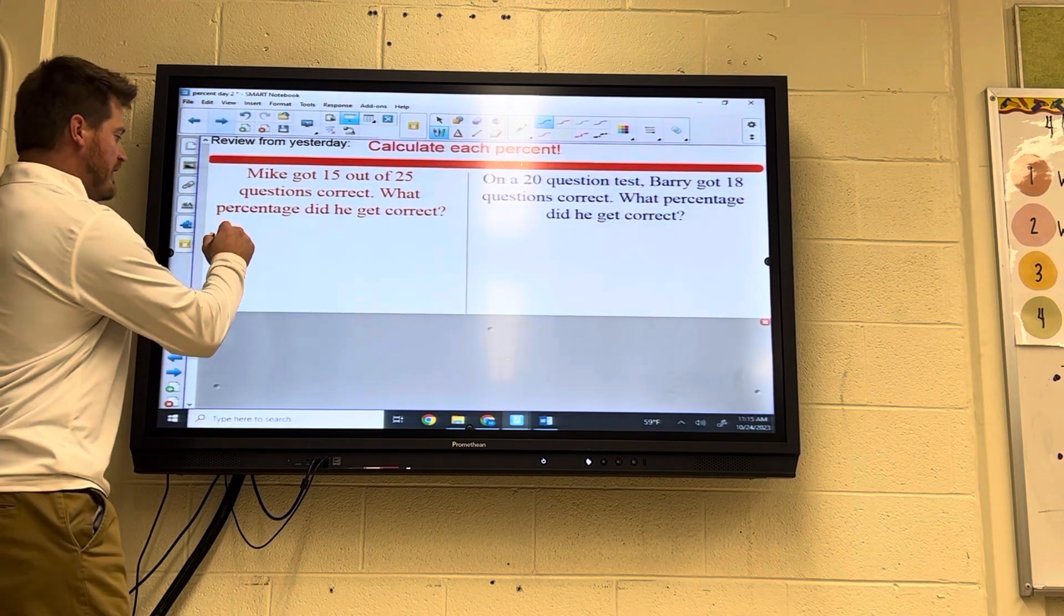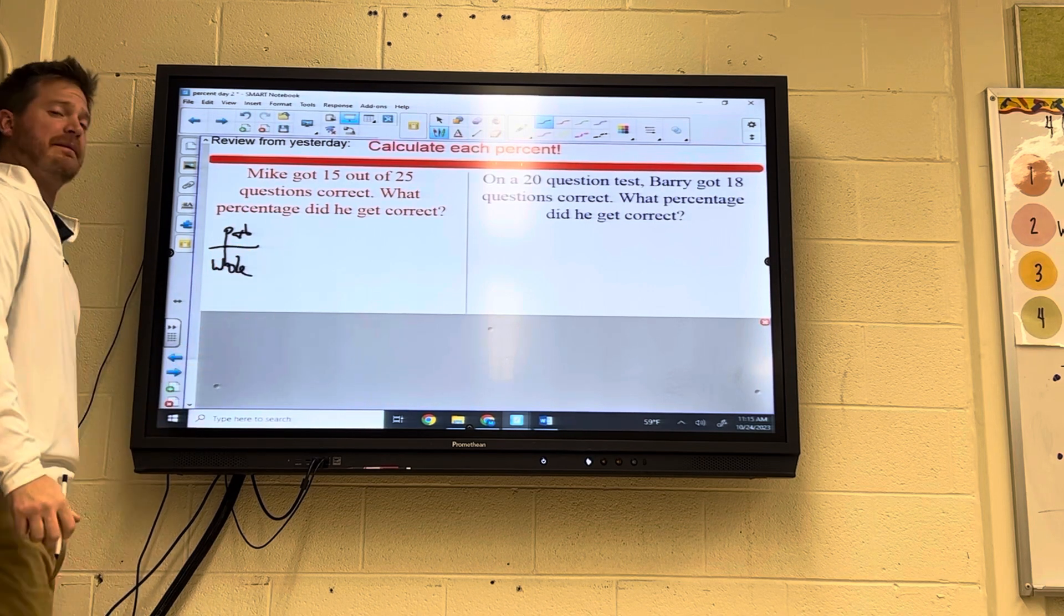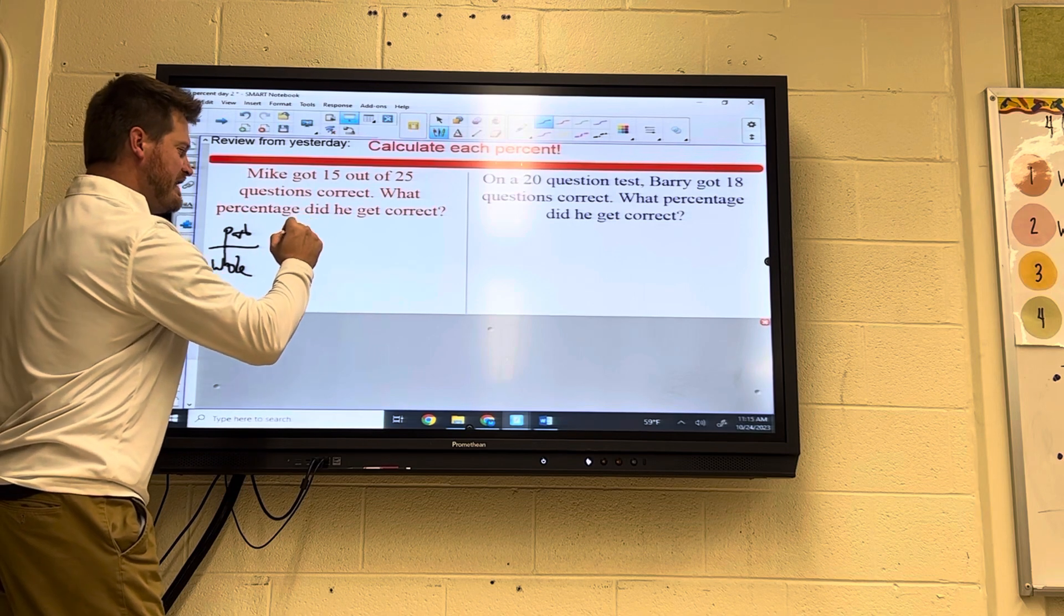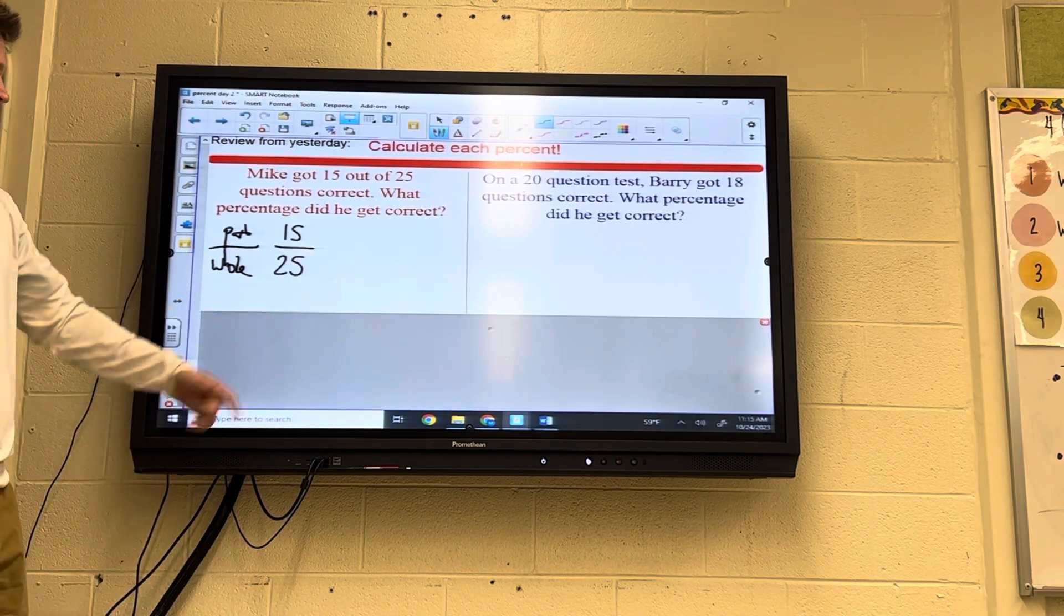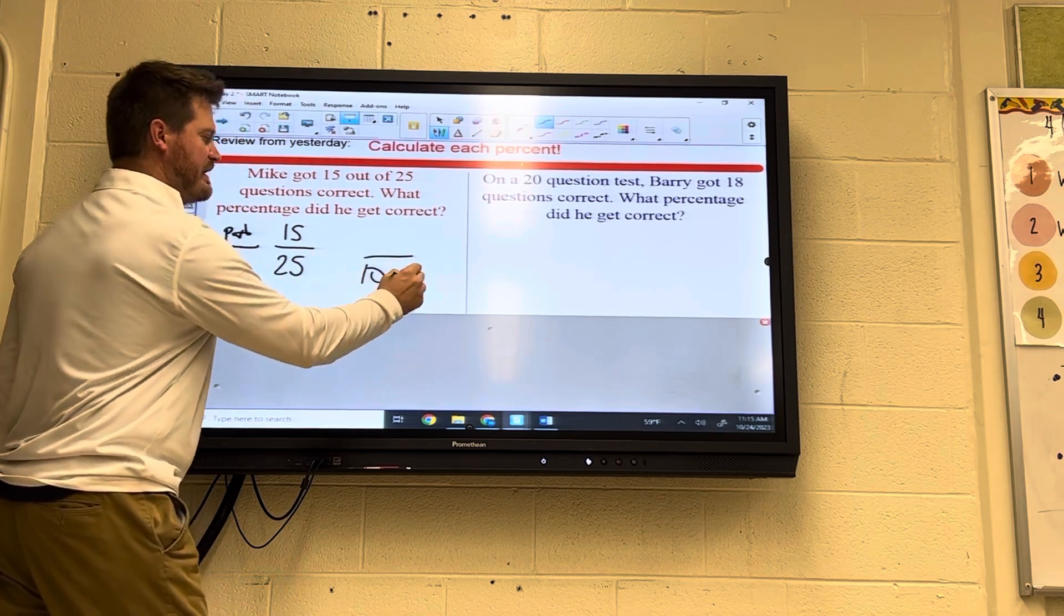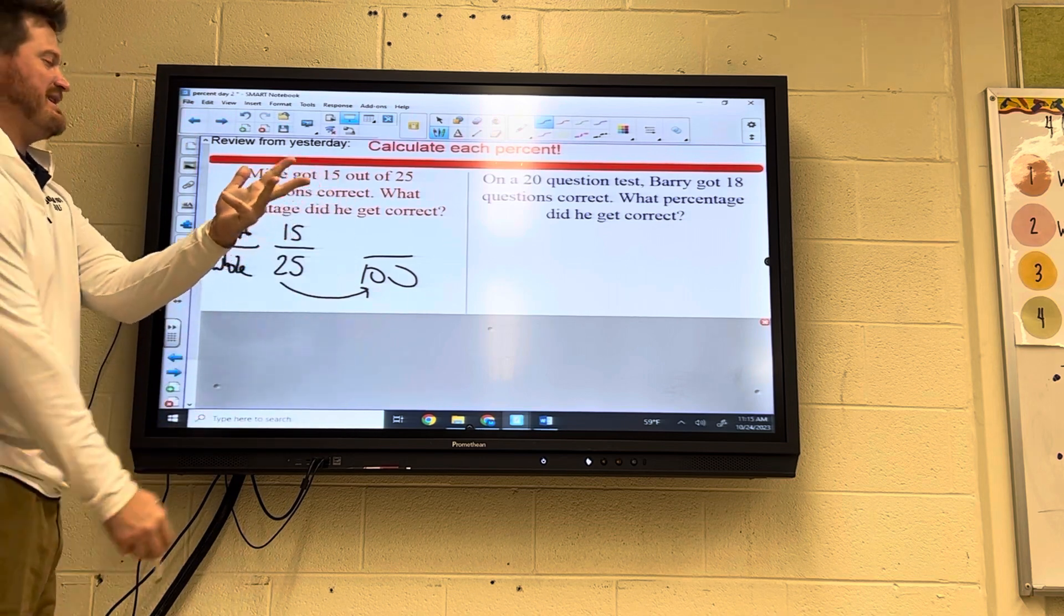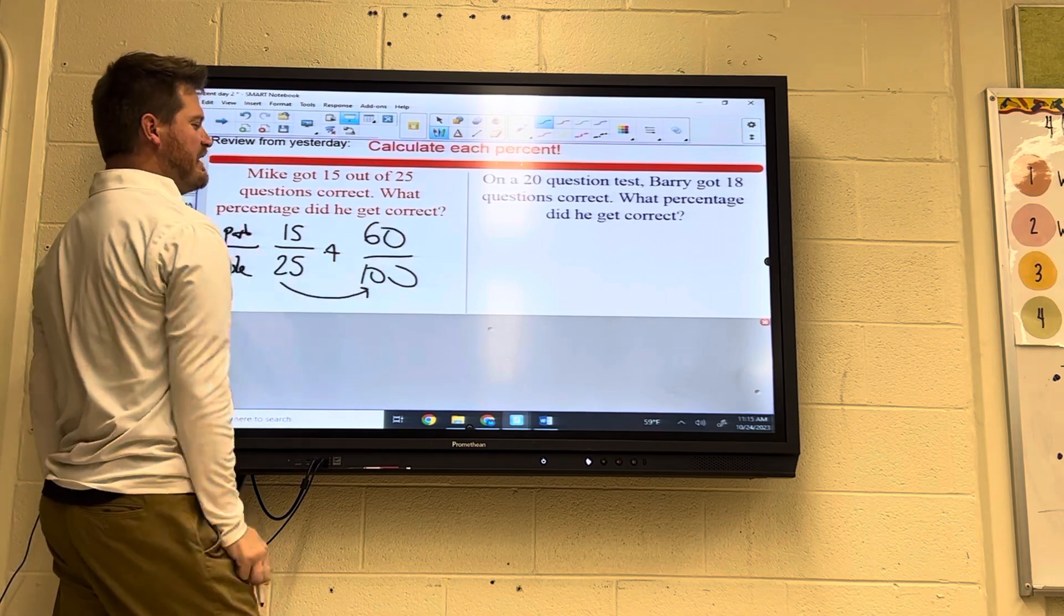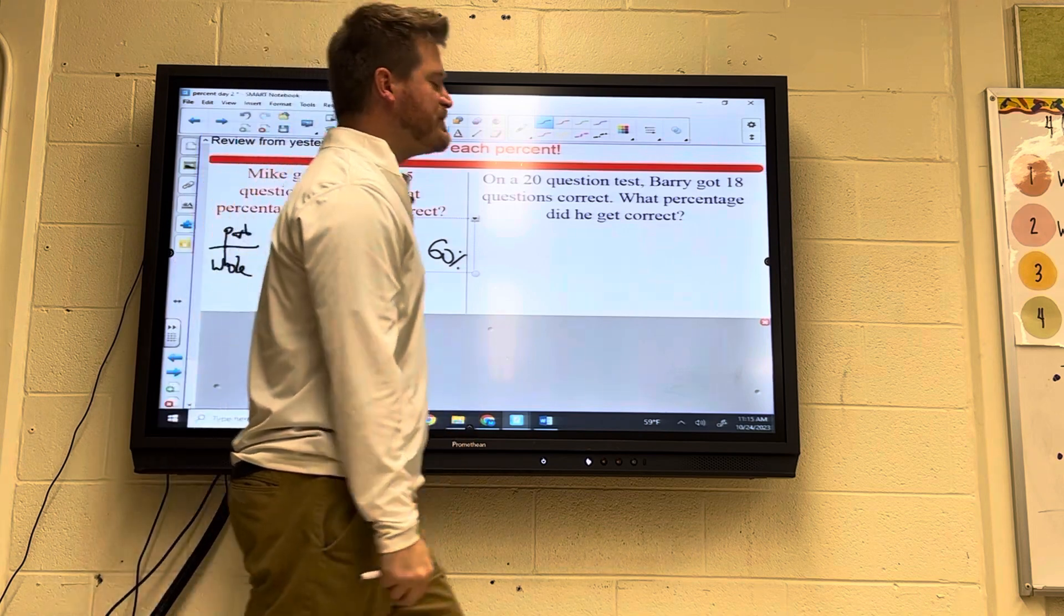Remember, it's always part to whole. Part to whole. The total amount will always be our denominator. That's the number we got to get to 100. So if I have 15 out of 25, percent, percent literally means per 100. We got to get this to 100. So from 25 to 100, 25, 50, 75, 100. That's 4. We multiply by 4. 15 times 4, 60. And 60 over 100 is 60%.